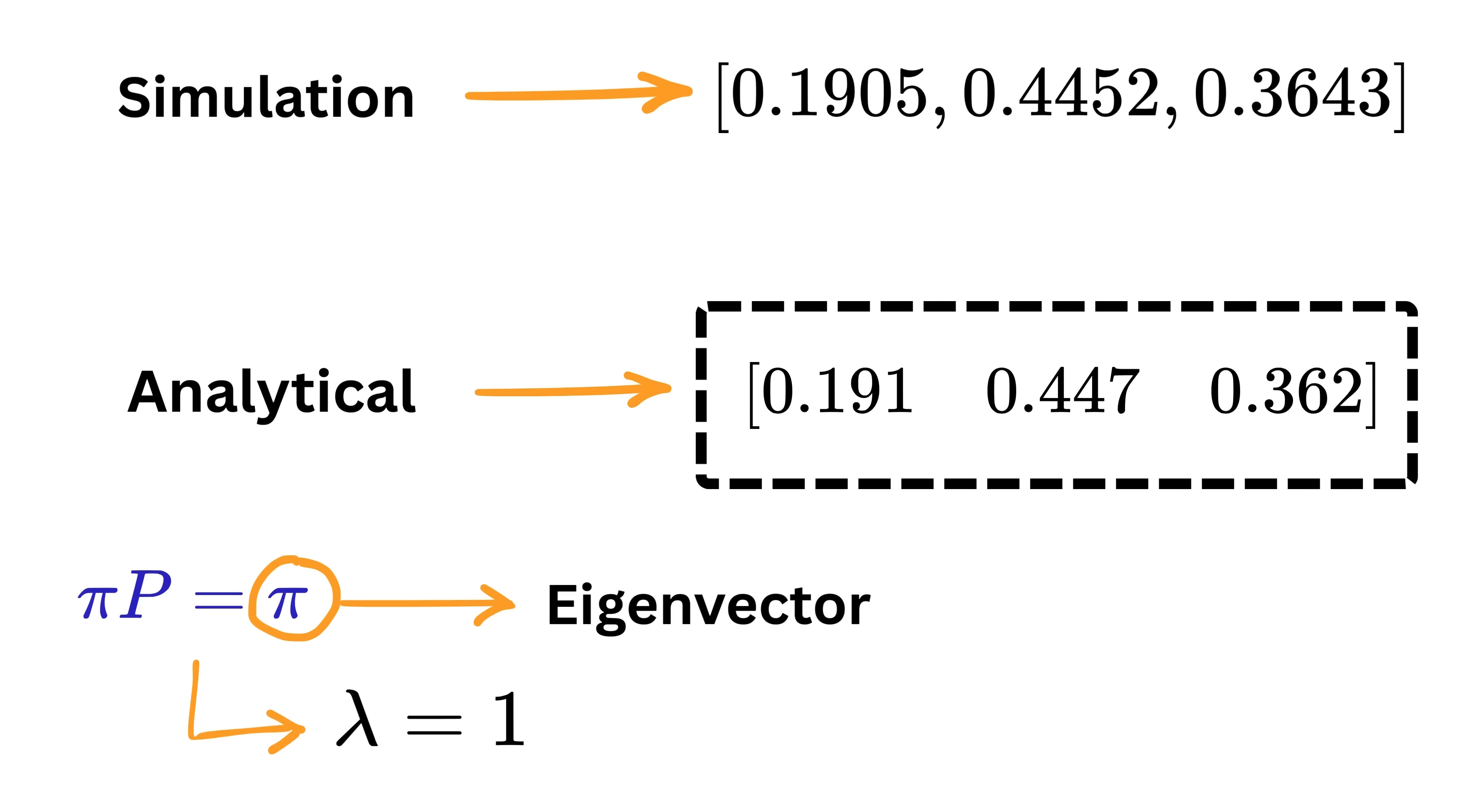Now, let's take the result we just found using linear algebra and compare it with the one we got earlier from the simulation. Oh boy, look at that. They match pretty closely. That's a great sign because it confirms that our understanding of Markov chains is on the right track.